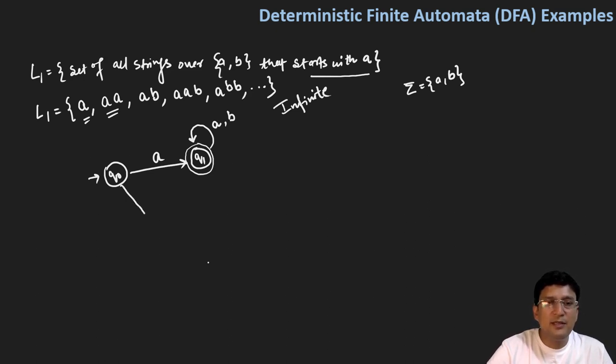But if our string starts with symbol 'b', then this string can never be accepted. Therefore we reach a state Q2. Q2 is our dead state, meaning this state will never reach the final state. So if we have reached Q2 state, it means our string started with 'b', and after that whether 'a' or 'b' comes, you remain in the dead state because this string cannot be accepted.